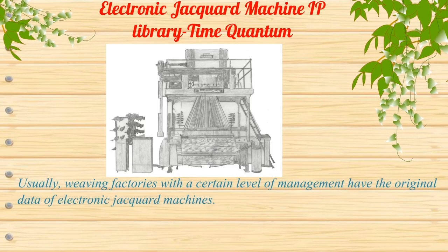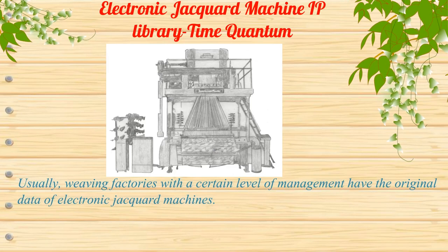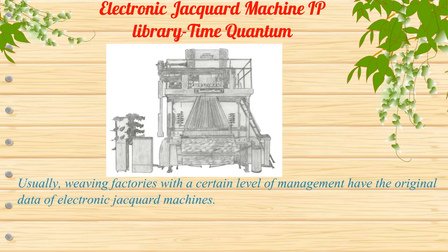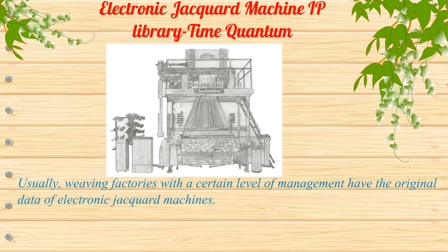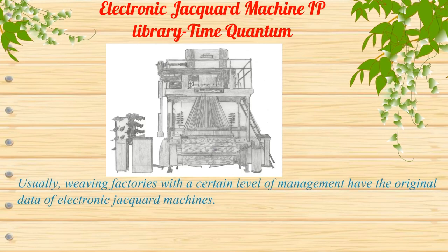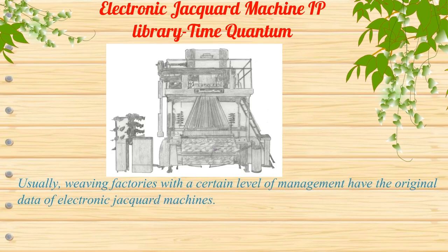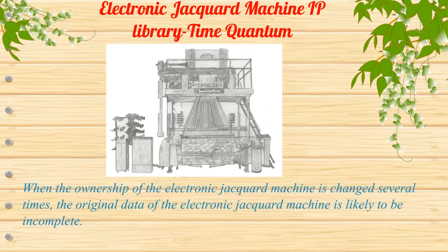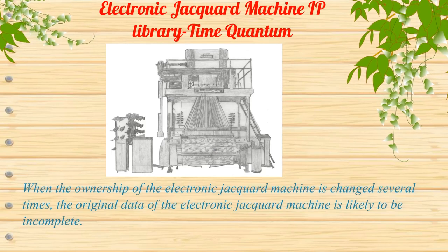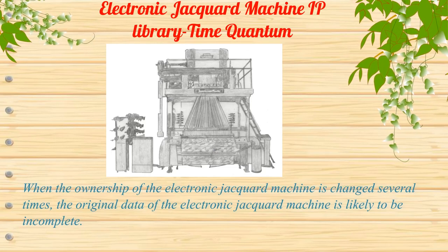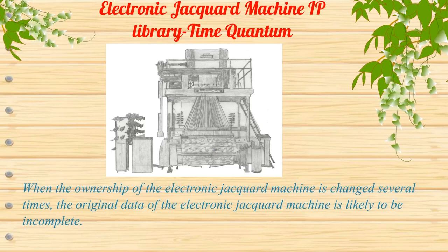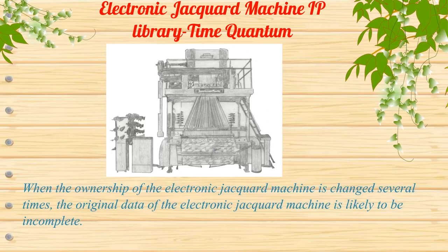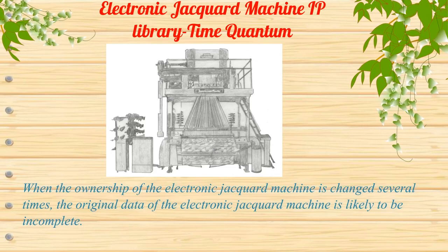Usually, weaving factories with a certain level of management have the original data of electronic jacquard machines. However, when the ownership of the electronic jacquard machine is changed several times, the original data is likely to become incomplete.